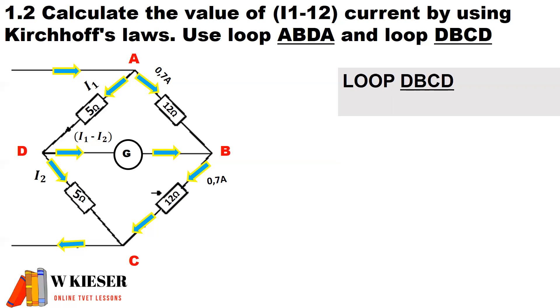Right, now we can take a look at loop DBCD. Over here, once again, we've got 0.7 amps multiplied by the 12-ohm resistor minus 5 ohms multiplied by I2.